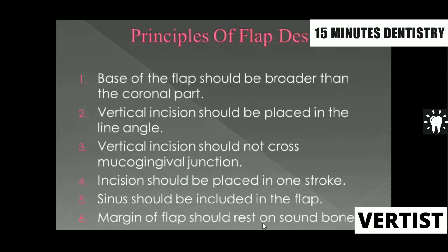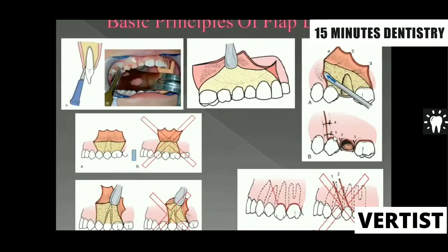When suturing back, you should always suture the corners of the flap first, rather than starting from one side and continuing to the other, because if you do that the papilla will be shifted. Always suture from this margin as well as the opposite side margin, so that the flap is in its proper position in the post-operative period.